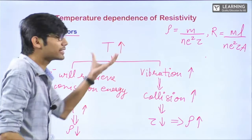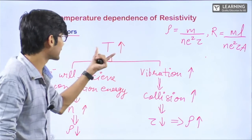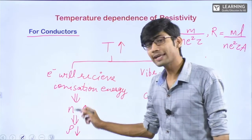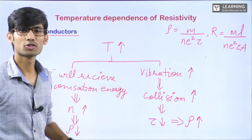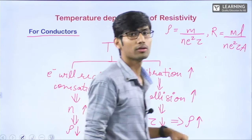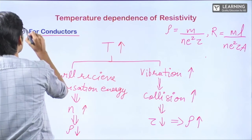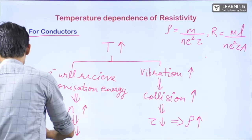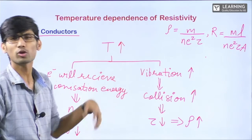So when temperature increases: τ is decreasing, which causes resistivity to increase; and at the same time, N is increasing, which causes resistivity to decrease. Two opposite things are happening. Overall, will resistivity increase or decrease? We will get to know by what kind of material we are dealing with. Right now, we are talking about conductors.